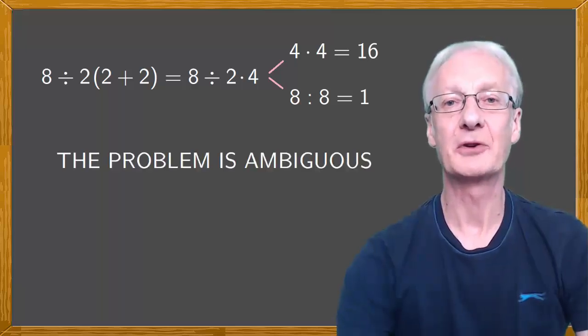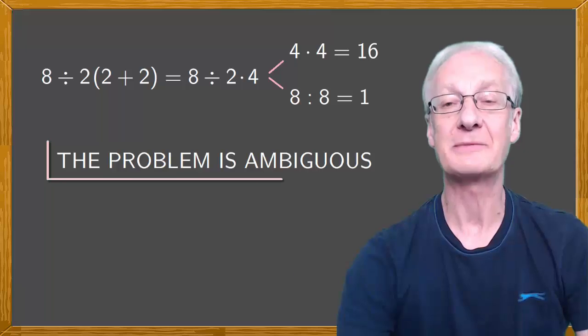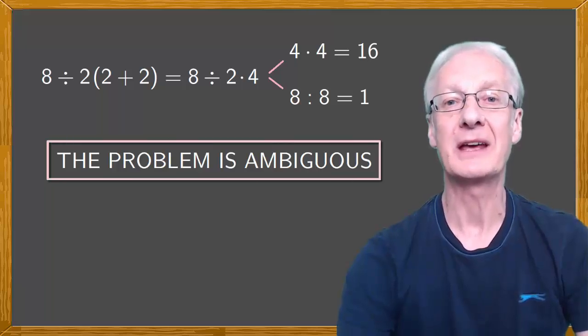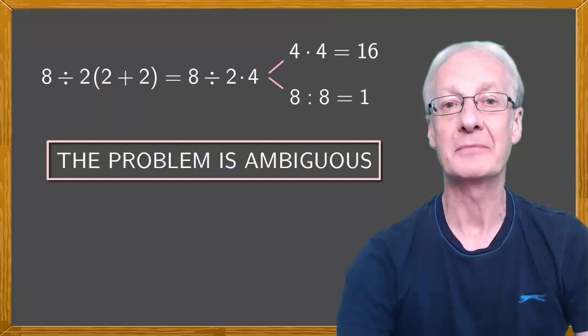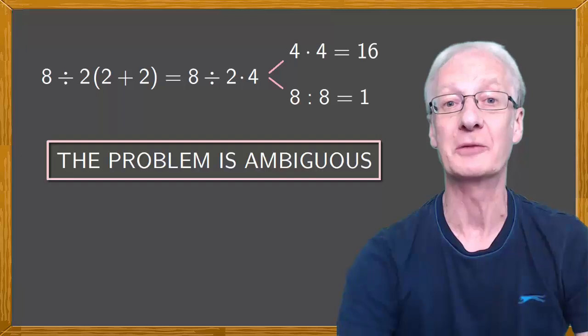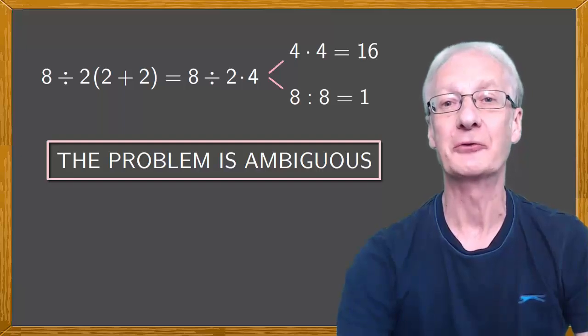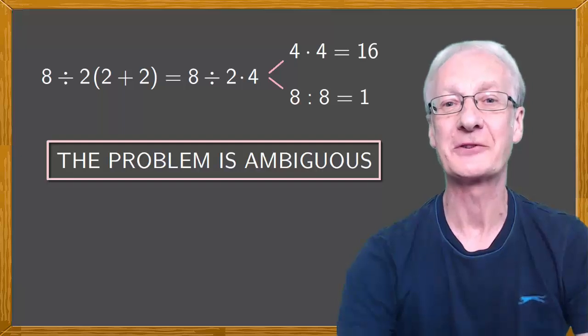The simple fact is the problem is ambiguous. It's poorly stated and can't be answered uniquely in the form it's presented. To remove the ambiguity, parentheses are needed. And no doubt whoever wrote the problem knew this and also realized that the controversy would help it go viral. So congratulations to them. They succeeded.